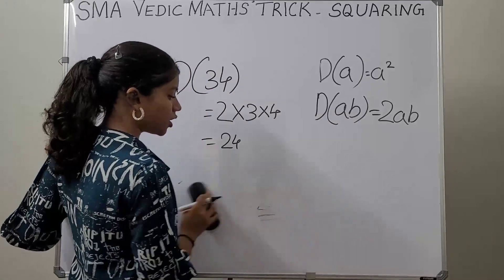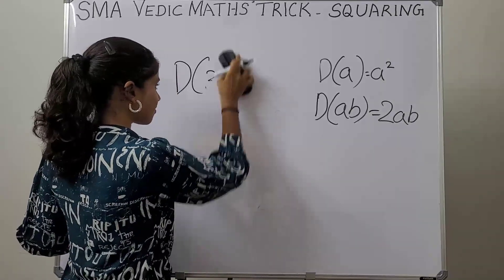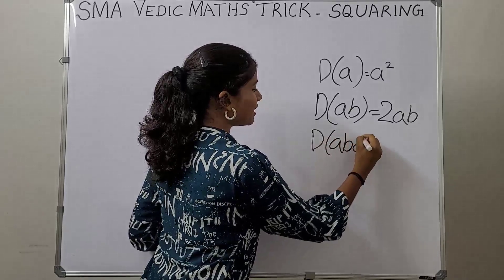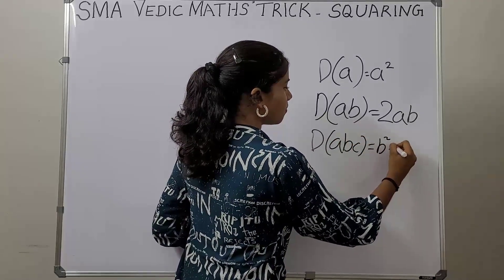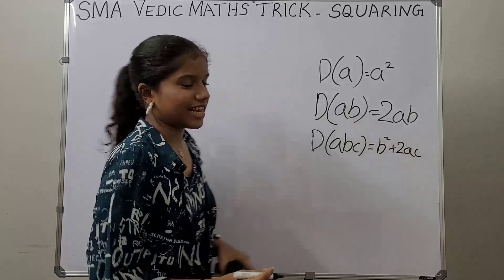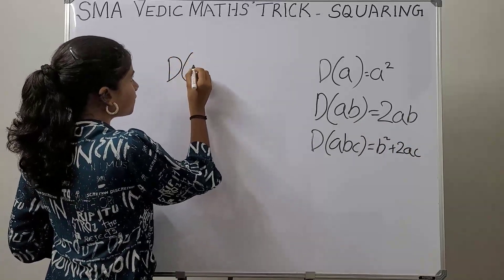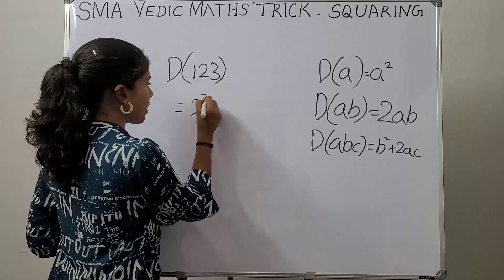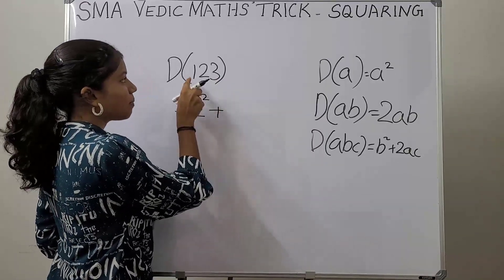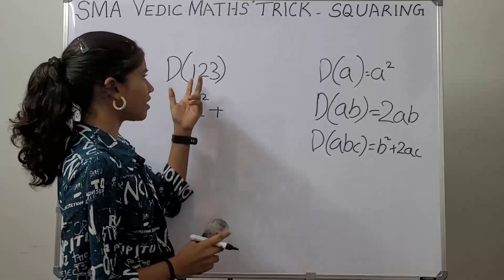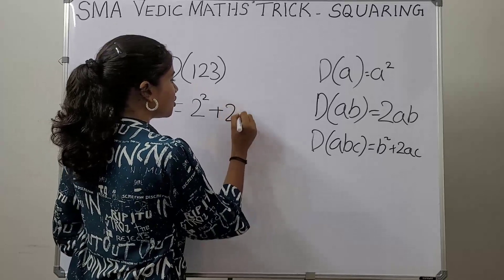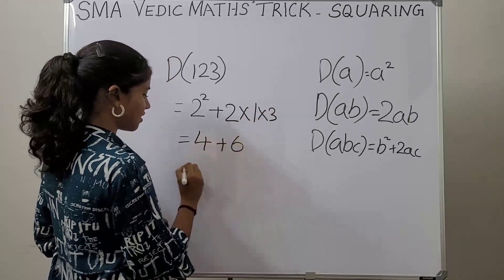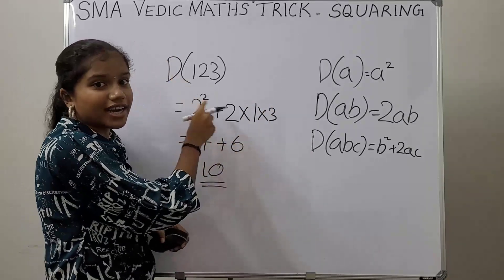Now let's see how to find the duplex of a 3-digit number. Duplex of a 3-digit number abc is b² + 2ac. Let's take an example: duplex of 123 — we square the middle digit, 2², then multiply both extreme digits and double them: 2×1×3. It becomes 4 + 6 which is 10. So duplex of 123 is 10.